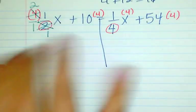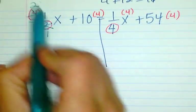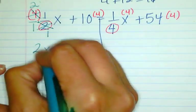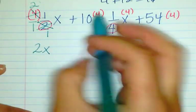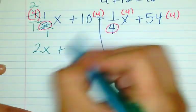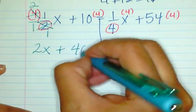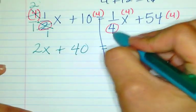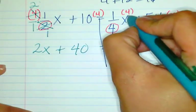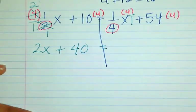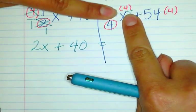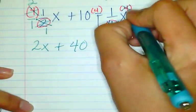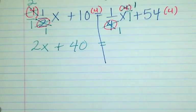Those reduced and are gone. On this side I have 2x. Over here it's easy — I'm just multiplying 10 times 4, which gives me 40. So that side of the equation is done. On the other side, I'm multiplying one-fourth times 4. Putting x over 1, we simplify diagonally — that 4 is gone, this 4 is gone — they simplify into 1.